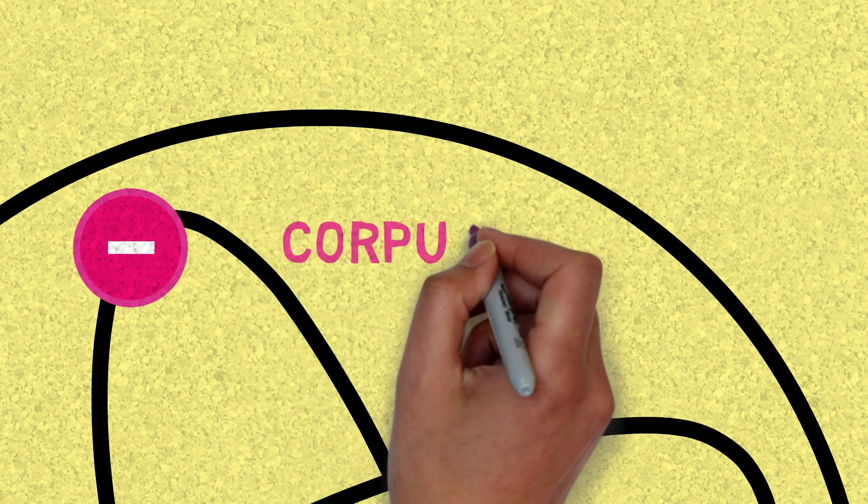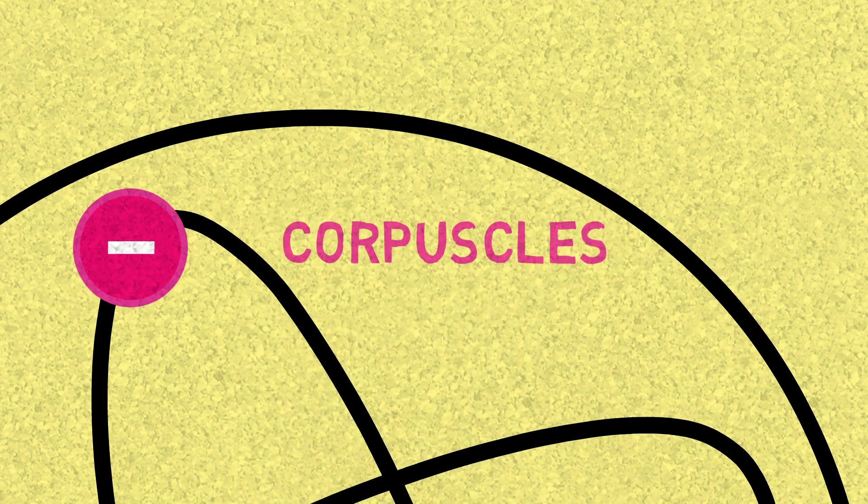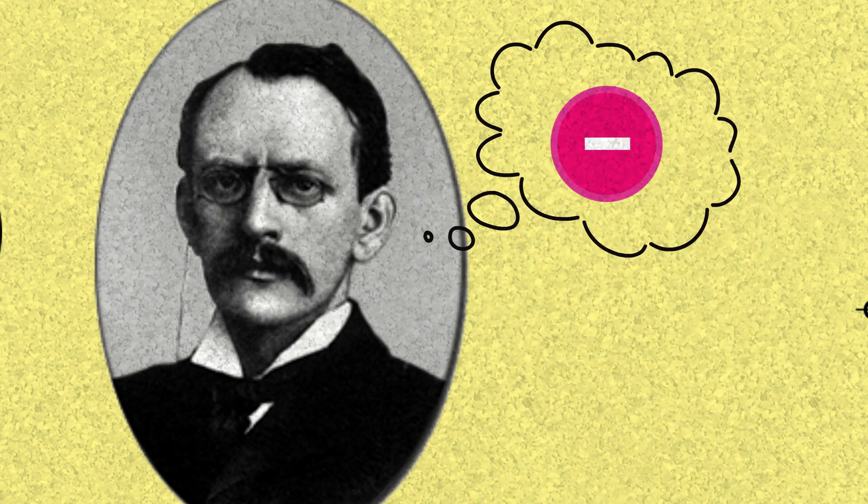Thompson called them corpuscles. But this is what we now know as an electron, and this is how the electron was discovered by J.J. Thompson.